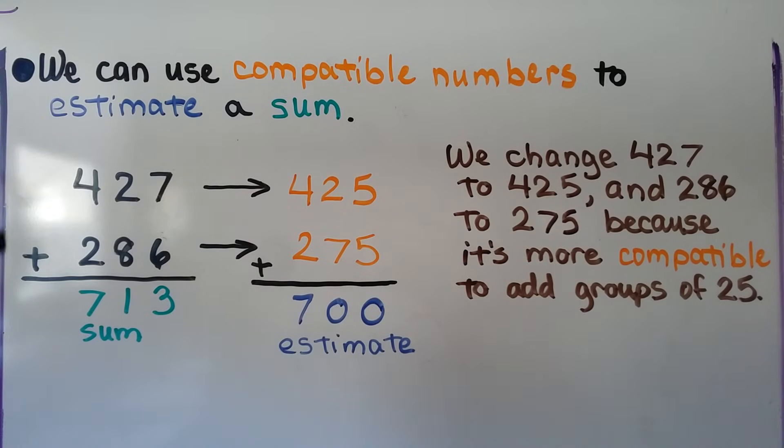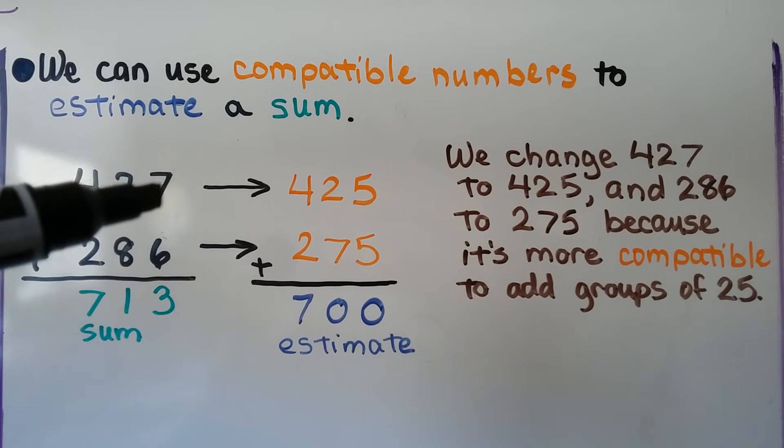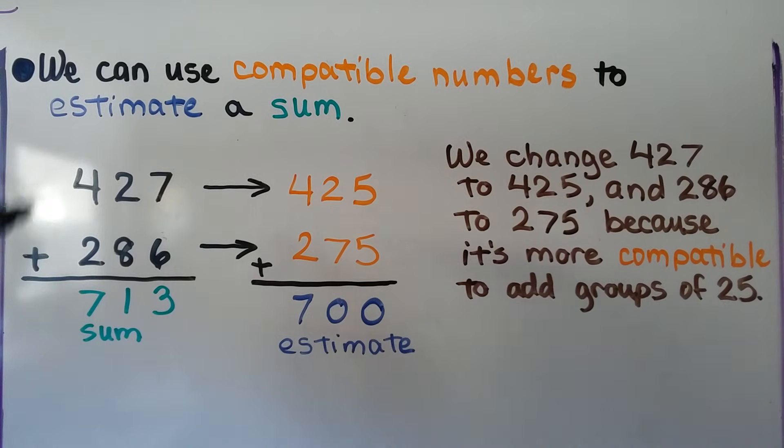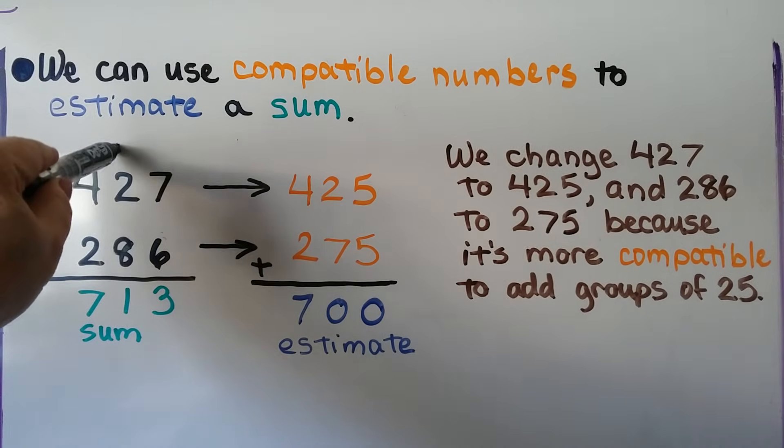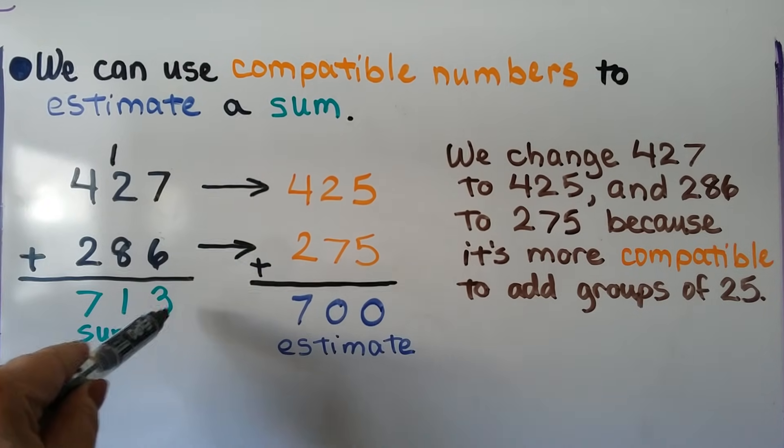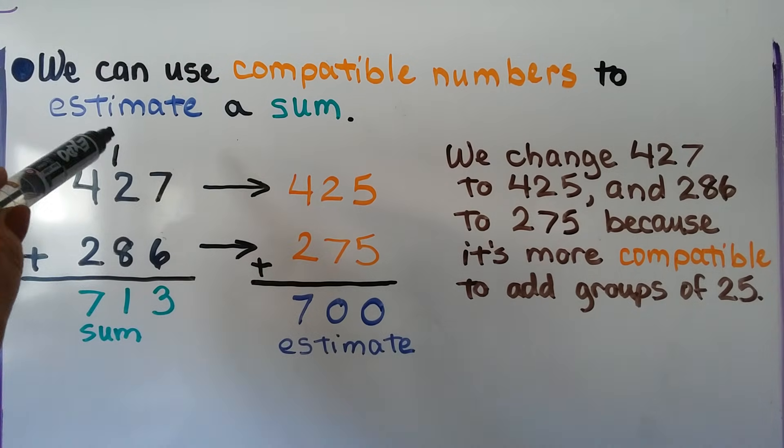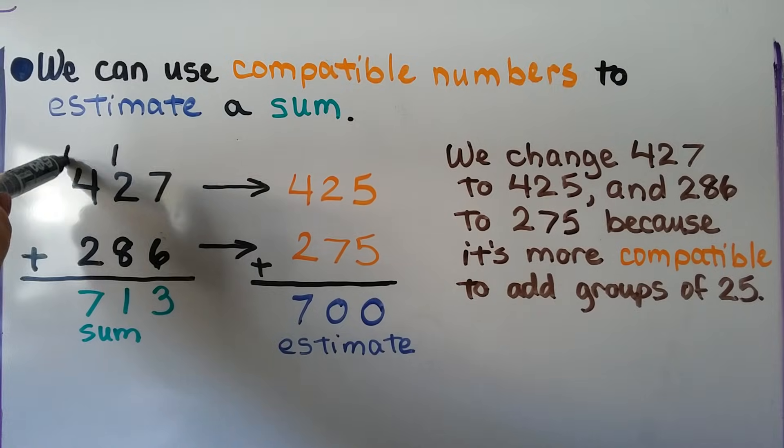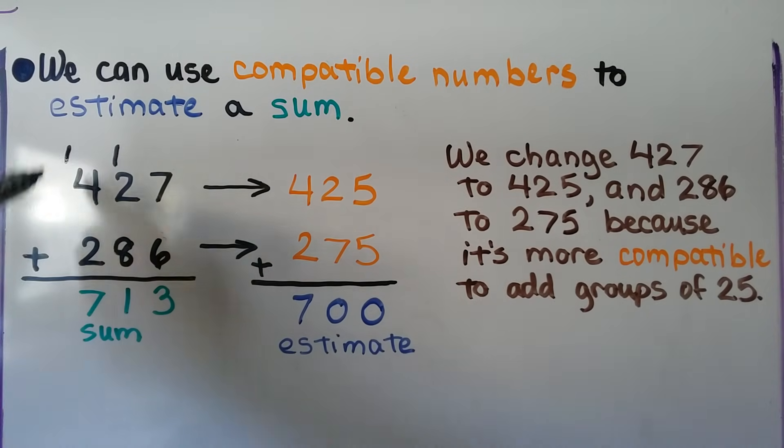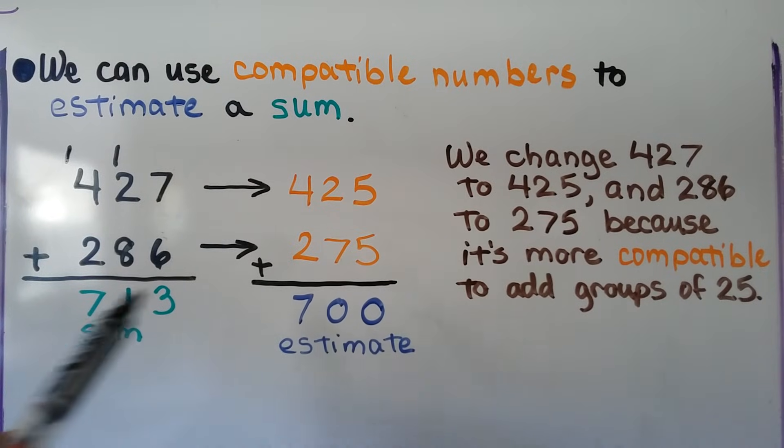If we add them for real, we'd have a 6 and a 7, which is 13. We regroup the 1 and put the 3 down. We do 8, 9, 10, 11, regroup the 1 again, put the 1 down, and then we have a 7.